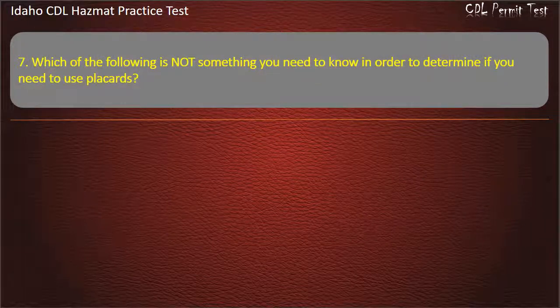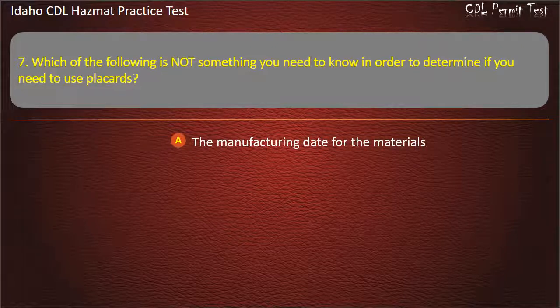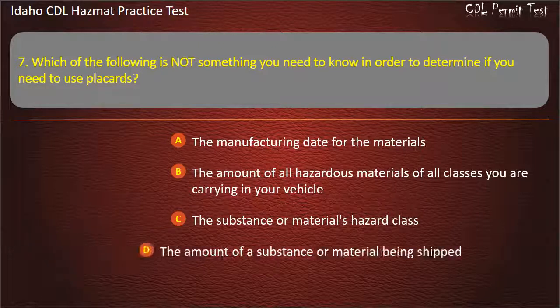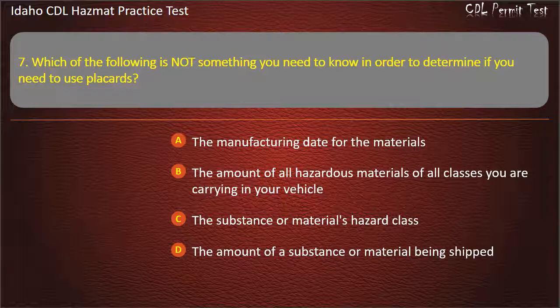Question 7. Which of the following is not something you need to know in order to determine if you need to use placards? The manufacturing date for the materials. The amount of all hazardous materials of all classes you are carrying in your vehicle. The substance or material's hazard class. The amount of a substance or material being shipped. Answer: The manufacturing date for the materials.